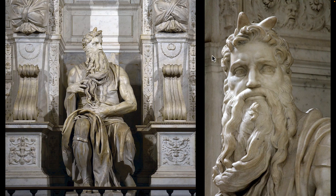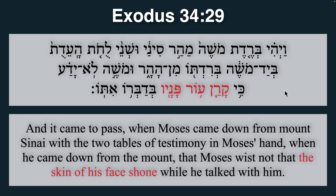So where did these guys get the idea that Moses had horns or he grew horns? We read in Exodus chapter 34, verse 29. So let me give a context of this. In Exodus chapter 34, Moses goes again into Mount Sinai to receive the 10 commandments for the second time — after the first tablets were broken — and he comes down from the mount with the two tablets of testimony, and we see that people saw him with his face shining, the skin of his face shone while he talked with God.